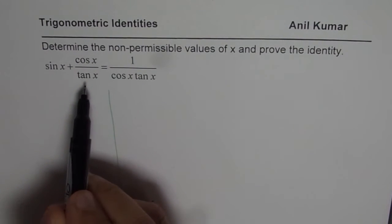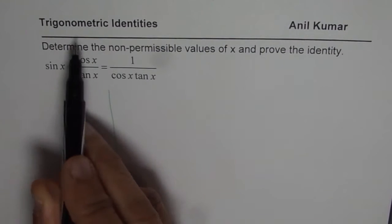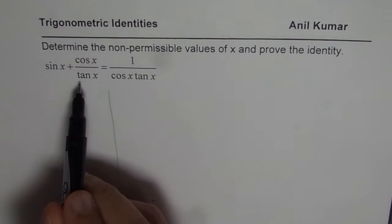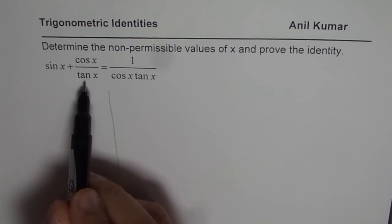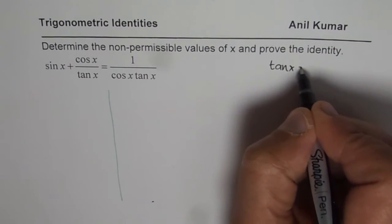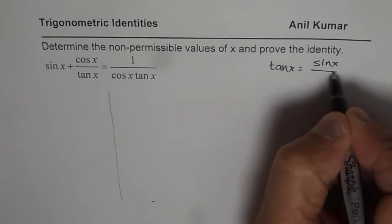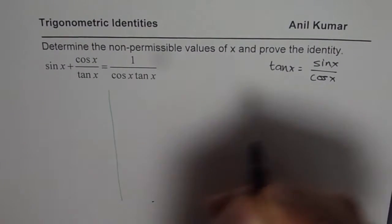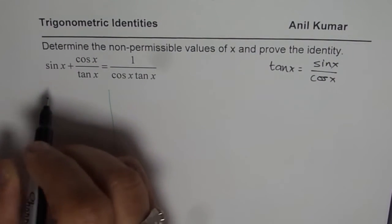We have sin x plus cos x over tan x. When proving identities, it is good practice to write tan x as sin over cos x. So we will write tan x as equals to sin x over cos x. That should be the first step normally.